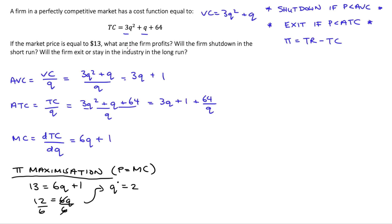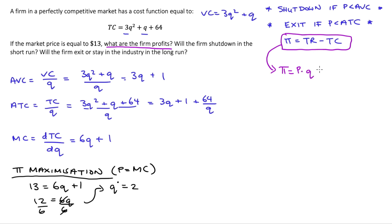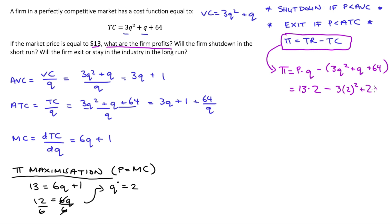We can then find profits. Profit equals total revenue minus total cost. Total revenue is price times quantity, and total cost is given in the question. So profit equals 13 times 2, minus (3 times 2 squared plus 2 plus 64). That gives us 13 times 2 is 26, minus (3 times 4 is 12, plus 2, plus 64).